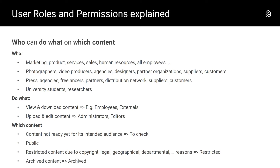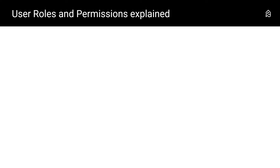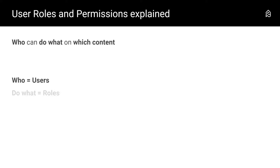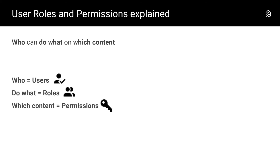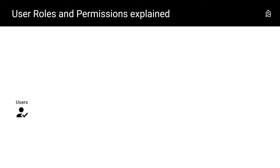So, who can do what to which content? If you want to implement this into your Picturepark: 'who' is managed in the menu on the left under Users; 'to do what' can be configured under Roles; and 'which content' is matched on the Permissions. Let's look at these three concepts in a bit more detail.